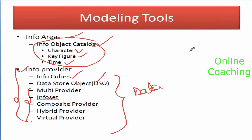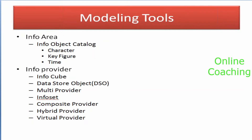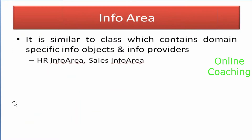Now let's come back to Info Area. What is the purpose of Info Area? Why should I create this? What is the Info Object Catalog under this, and when and why do I have to create it? Info Area is similar to a class which contains domain-specific Info Objects and Info Providers. Info Area is nothing but a folder object.